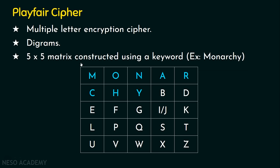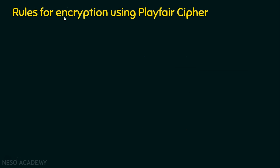We are done constructing the 5×5 matrix using the keyword Monarchy. Now we can proceed to the encryption technique. For encryption, we need a plain text. Before seeing the encryption, we should know the rules. The first rule is creating the digrams: if you have a plain text, split it into digrams of two letters. Rule number two involves inserting a filler character if there are repeating letters in the digrams.